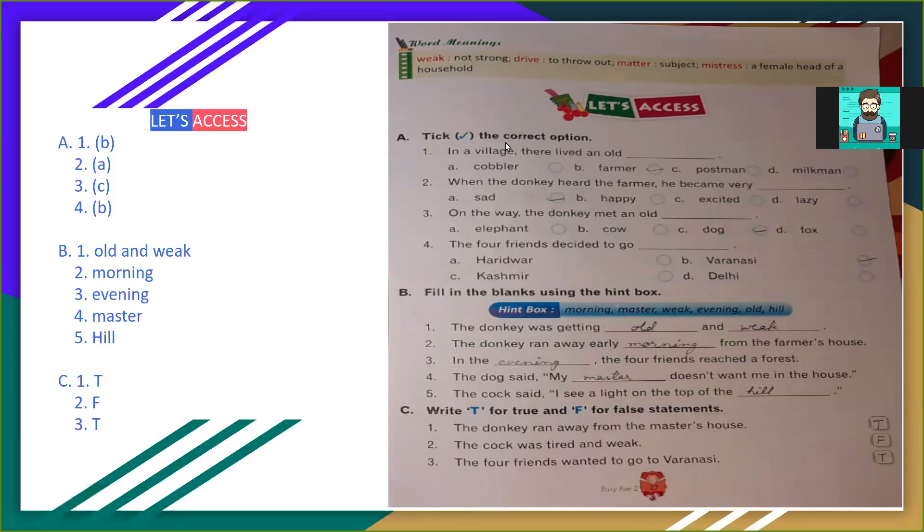A, tick the correct option. First, in a village there lived an old farmer. The first answer is B. Second, when the donkey heard the farmer, he became very sad. Jab donkey farmer ki baat sunta hai, toh sad ho jata hai. So answer is A.